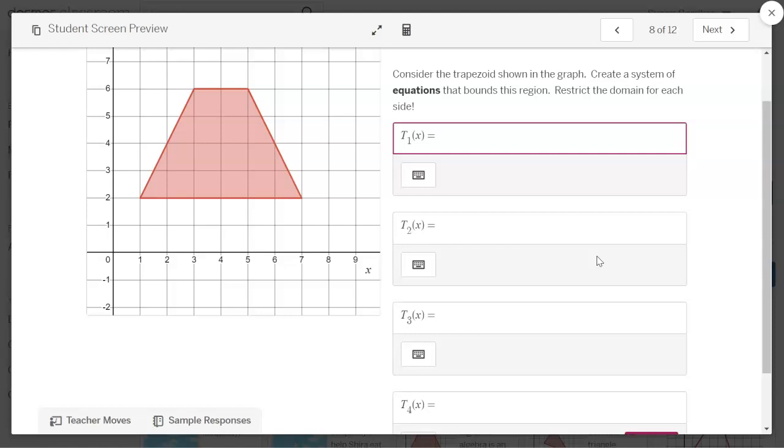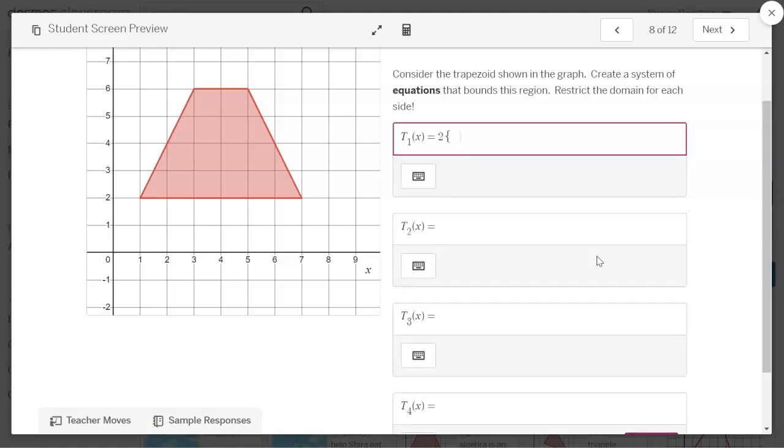So they're going to write equations for each one of these lines and they are going to restrict the domain so that it will only draw in that line. Now I'm going to do one just so you can see what happens. The first, let's do the bottom of our trapezoid here. So that would be y equals 2. And then I'm going to use a curly bracket and I'm going to say I want my x values to start at one and stop at seven. So I'm going to do one less than or equal to x, and you see how that blue popped in there, less than or equal to seven. And then I'm going to close my curly brackets. And see how it colors in that side of the trapezoid.